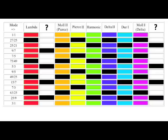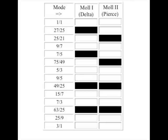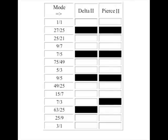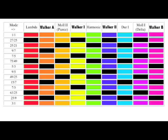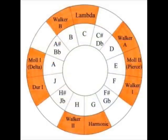I classified these modes as Pierce 2 and Delta 2, since they most closely resembled the mole 2 Pierce and mole 1 Delta modes. When Heinz Bohlen saw my research, he renamed my Pierce 2 and Delta 2 modes Walker 1 and Walker 2, and also named the two missing modes that I hadn't filled in yet — Walker A and Walker B. At least temporarily, until we think of better names.